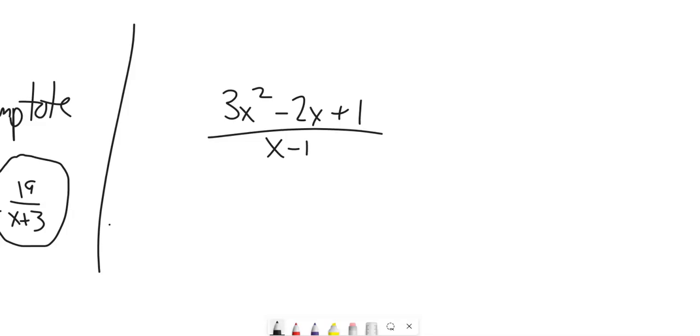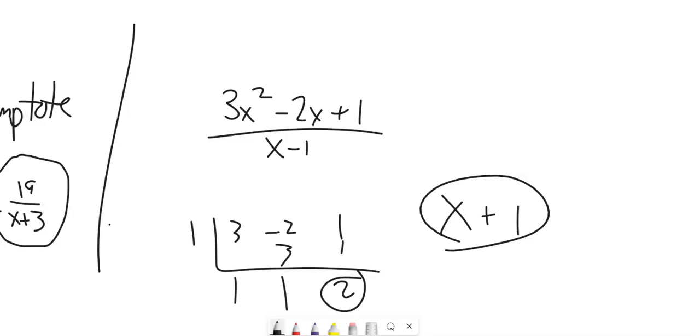So on this one, I could try and factor that, see if something cancels out. It's not going to. So this is a good candidate for slant asymptote, right? X squared over X. So I'm actually going to do this division. Grab the zero, doing that synthetic division. 3X squared, negative 2X plus 1. Bring it down, multiply, add, multiply, add. There's a remainder of two. So the slant asymptote is at X plus 1.